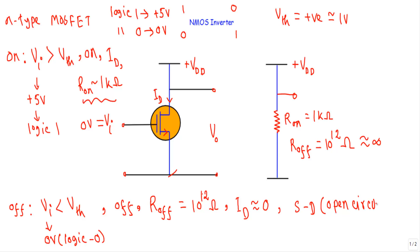Therefore, the channel region will act like an open circuit or open switch, and the drain current ID will be nearly equal to 0. When the MOSFET is in OFF state, the channel between source and drain acts like an open circuit, and I can disconnect the drain and source terminal from the original circuit.